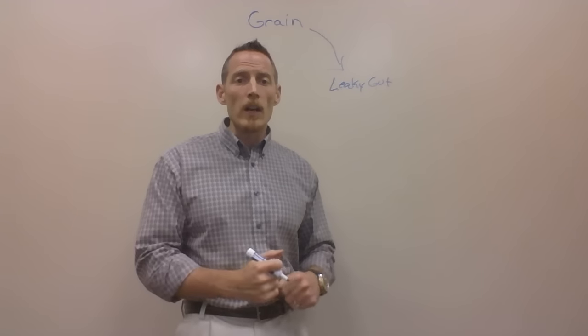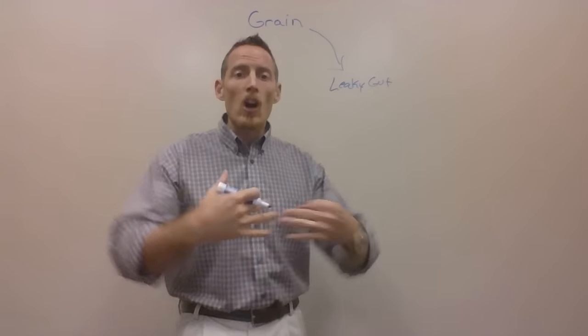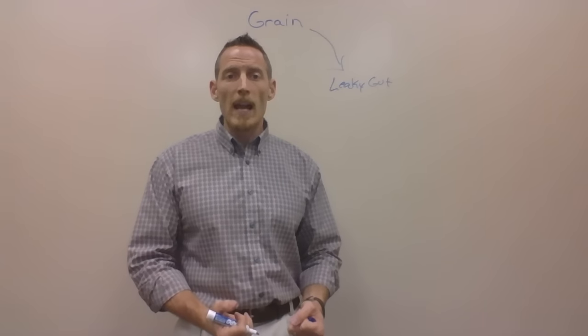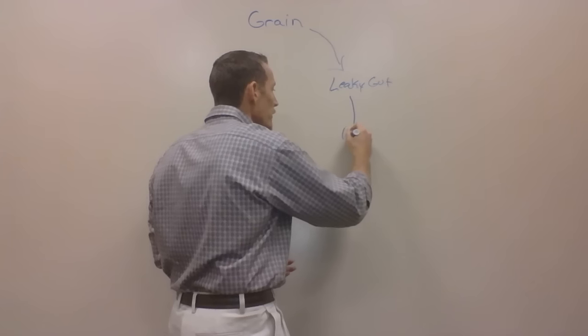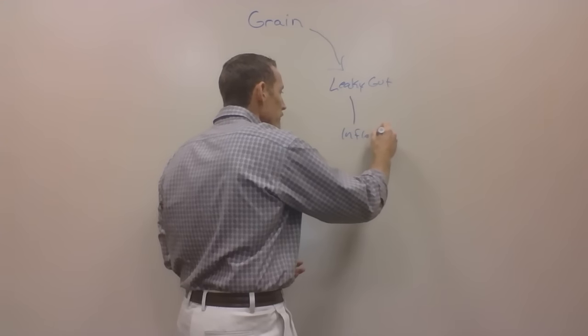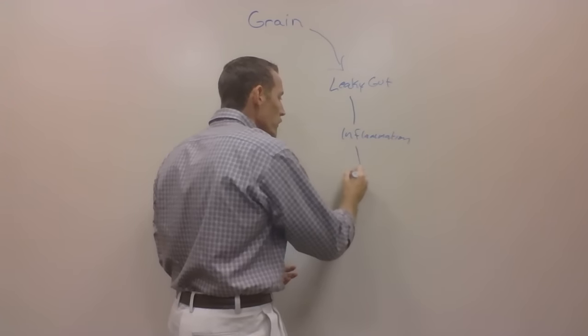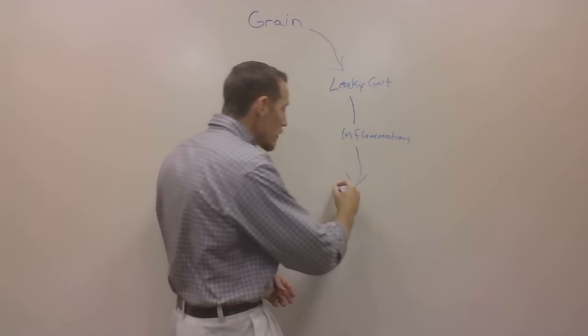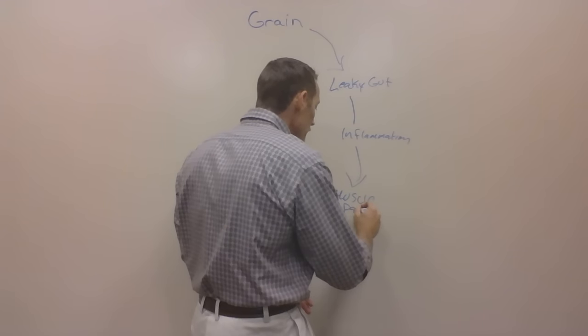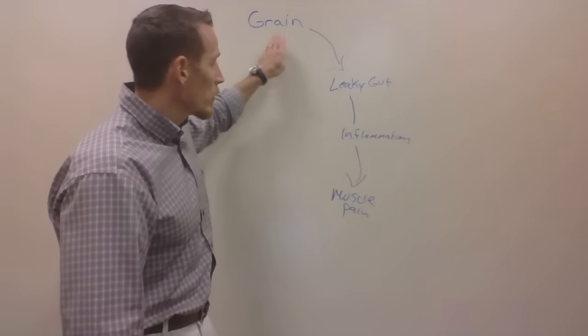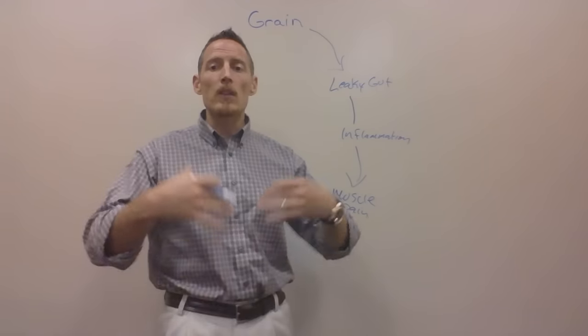As you're eating with these holes in your gut, these things are leaking into the immune system and causing it to over-respond and over-react. Over time, that creates a heightened inflammatory response. Inflammation, once it penetrates into the bloodstream, often causes muscle pain. We get people that begin to develop physical pain as a result of grain and glutens causing leaky gut and inflammation.